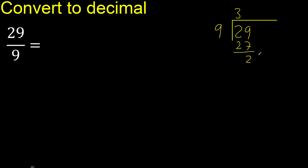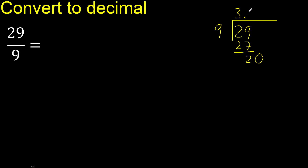There is no next number, therefore complete with 0. Point — 0 point. 29, 9 multiplied by 3 is greater. Multiplied by 2: 18. 20 minus 18 is 2.